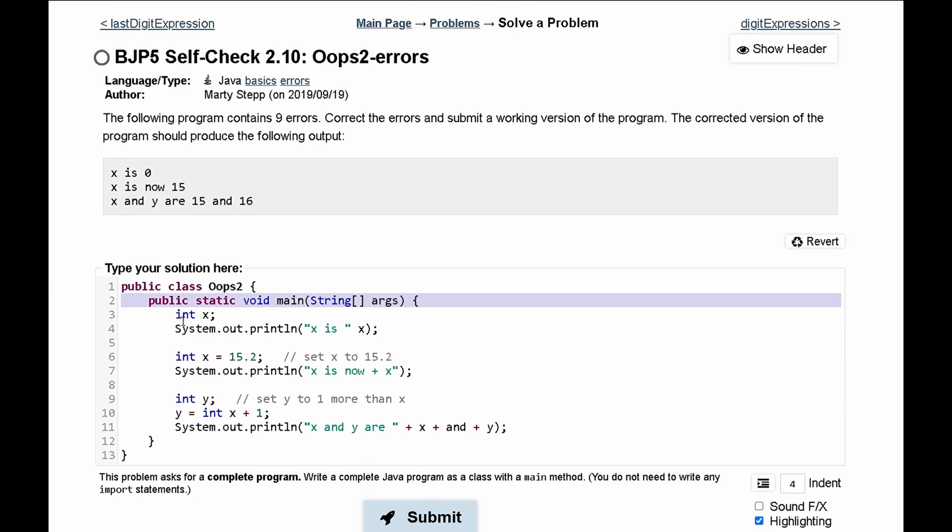Next, we are initializing our x, and then we are printing it out on line four. Well, we need to join these two strings with a plus like this for it to work. We also need to declare x, or we need to initialize x to be zero, since we want to print it as zero. Now that looks good, we can go on to line six.